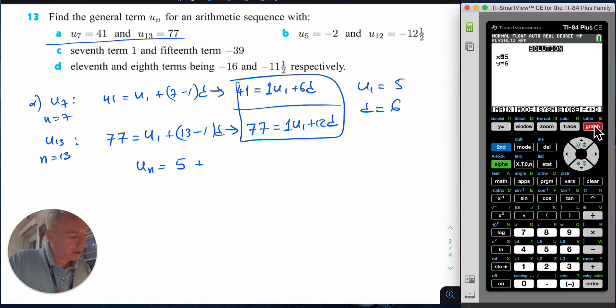That could be your final answer, or if you want to do more you can expand: un = 5 + 6n - 6, so you can say un = 6n - 1. But everything is accepted.